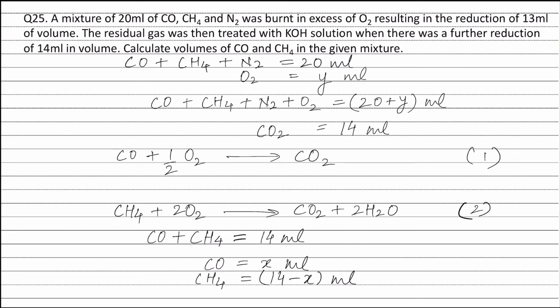The total volume of carbon dioxide formed is the same as the volume of carbon monoxide and CH4 present. Nitrogen does not take part in the reaction. So the reduction of 13 ml in volume is due to the decrease in the volume of oxygen, as oxygen is taking part in the reaction. Therefore, the volume of oxygen taking part in the reaction is equal to 13 ml.